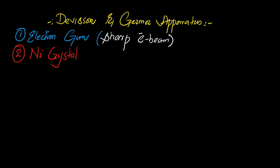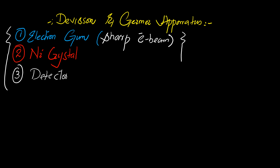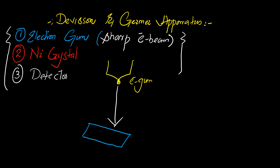Germer used a nickel crystal, and the third most important instrument used in the Davison-Germer experiment was a detector, which was basically a circular detector. From the electron gun, Davison directed a highly energetic beam of electrons onto the surface of a crystalline nickel crystal.